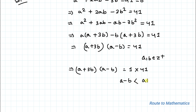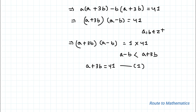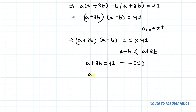By observation, a - b must be less than a + 3b. So to satisfy the equation, we set a + 3b = 41 (Equation 1) and a - b = 1 (Equation 2).